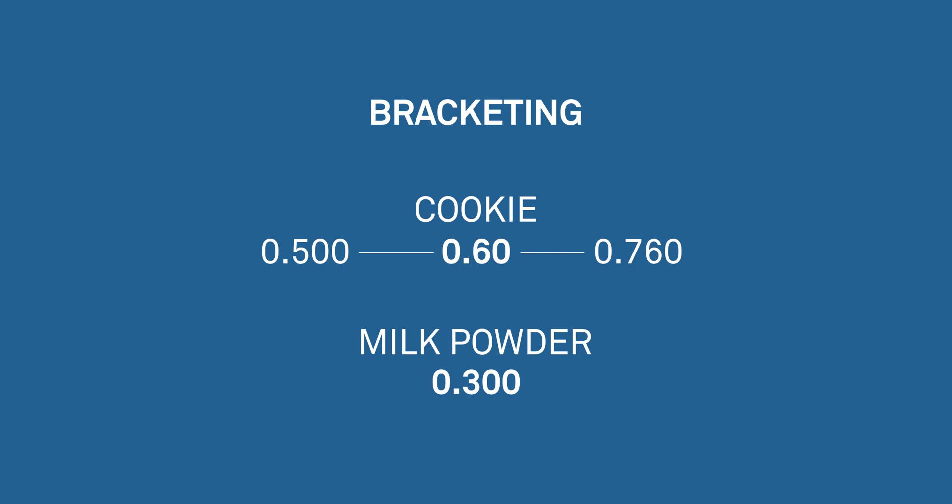The best way to verify your instrument is to use a technique we call bracketing. If you are measuring a cookie that typically has a water activity of 0.6, you should use the 0.5 and 0.76 standards to verify. If you are measuring milk powder in the 0.3 range, you should use the 0.25 and 0.5 standards to verify.